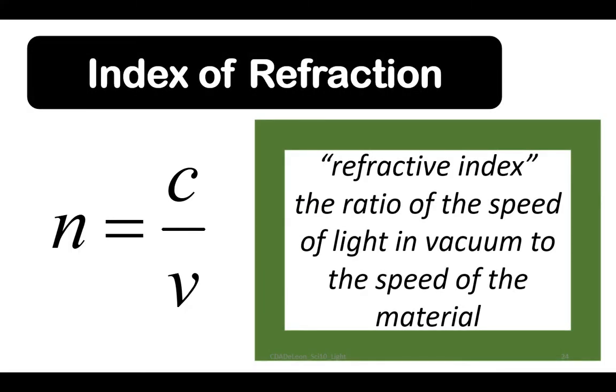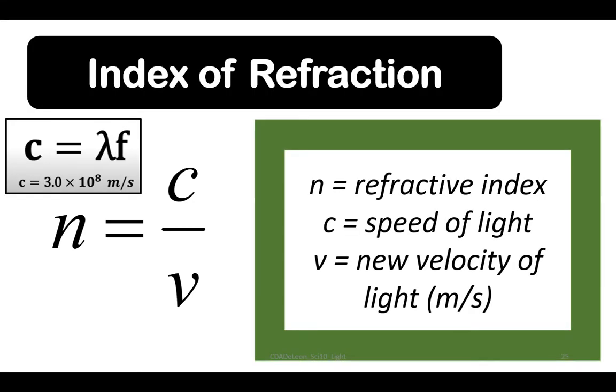Now let's discuss the Index of Refraction. The formula is n equals c over v. When you say refractive index, this is the ratio of the speed of light in vacuum to the speed of the material. Specifically, n is the refractive index with no unit at all.